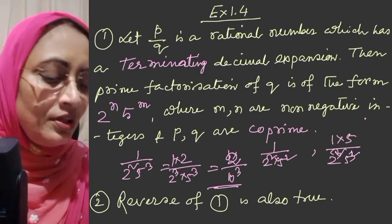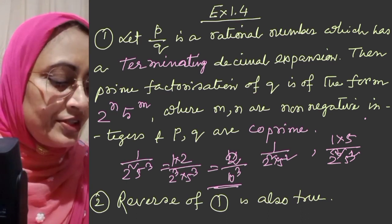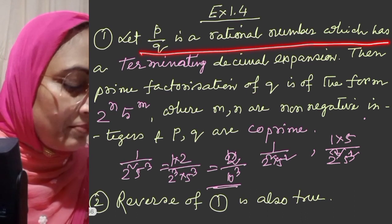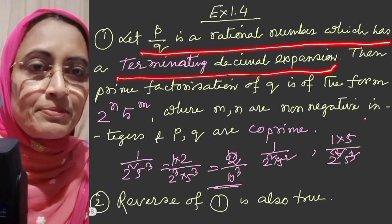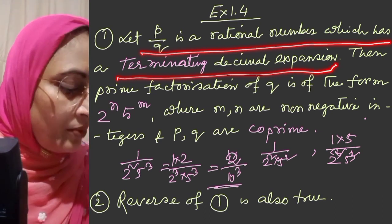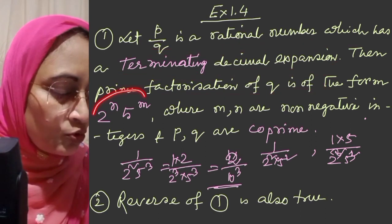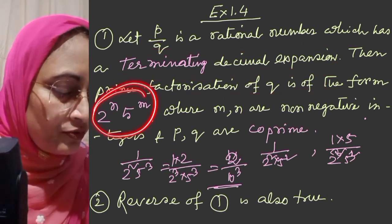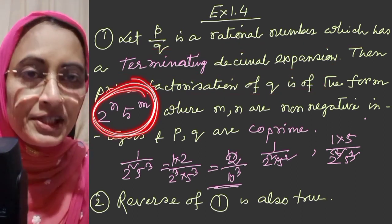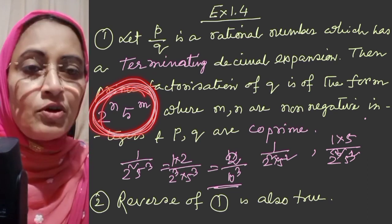Point number one: if P by Q is a rational number which has a terminating decimal expansion, after prime factorization Q must be of the form 2 to the power n into 5 to the power m. This is very much important — 2 to the power n into 5 to the power m.